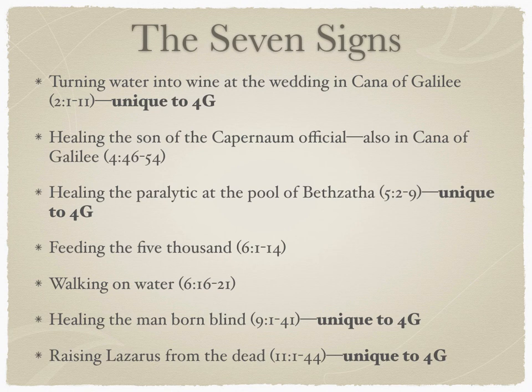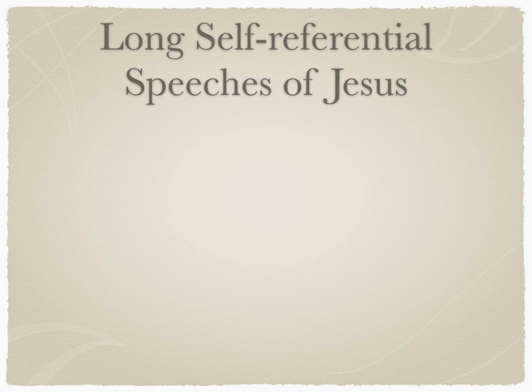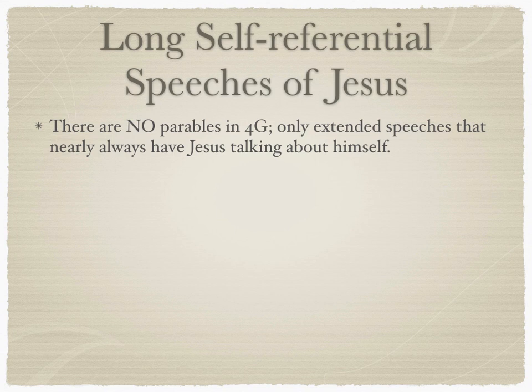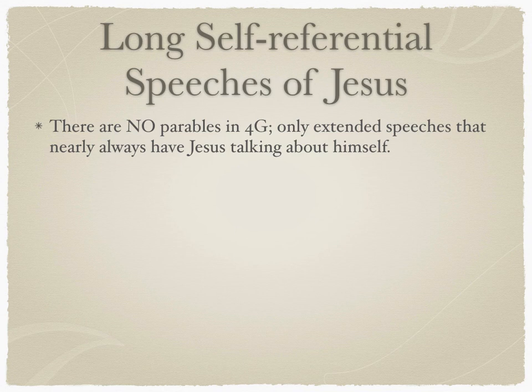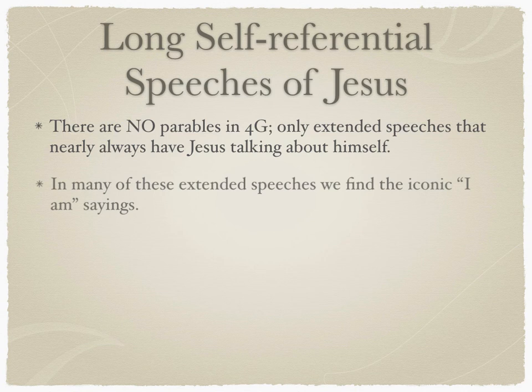These are the signs that point to who Jesus is in the Gospel of John. Another important characteristic is these long self-referential speeches — chapters long in a lot of places. There are no parables whatsoever in the Gospel of John. The parable of the Good Samaritan, the sheep and goats, the rich young ruler, the prodigal son — none of that is here. In many of these extended speeches, we find the iconic I Am sayings.